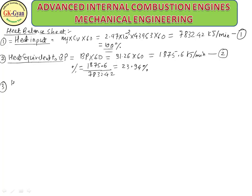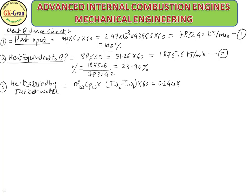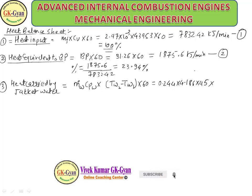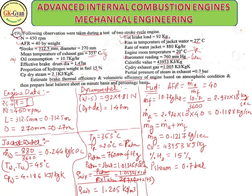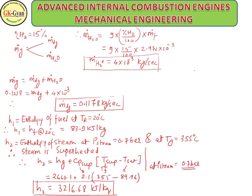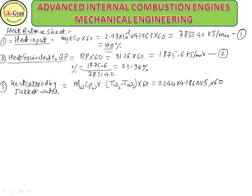Third, heat carried by jacket water = m_w × Cpw × (Tw2 − Tw1) × 60 = 0.244 × 4.186 × 45 × 60 = 1654.6 kJ/min. Percentage = 21.16%.